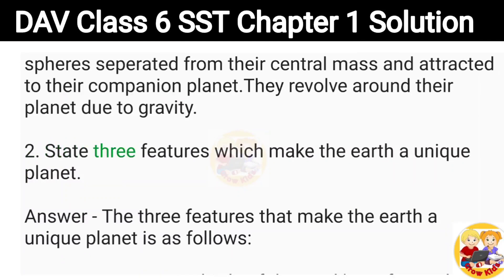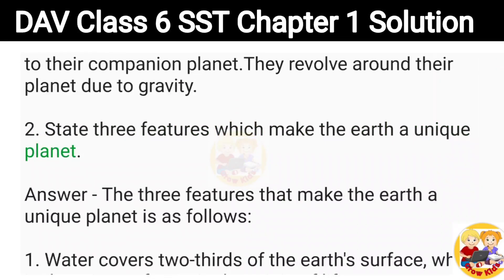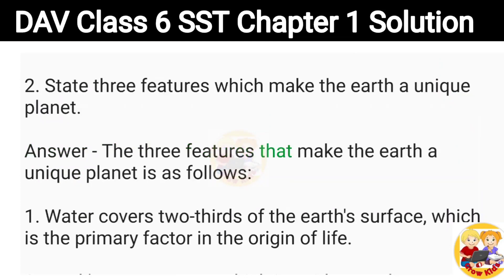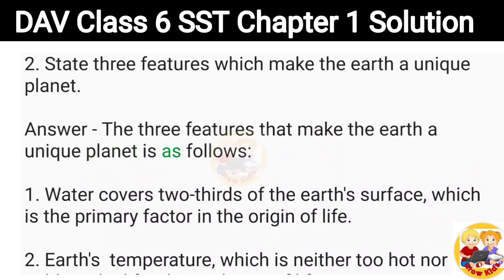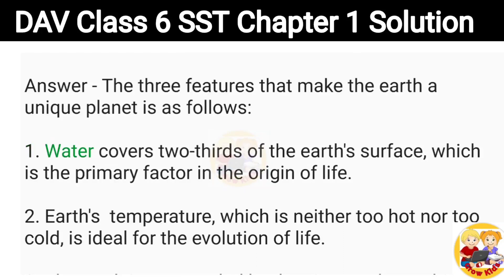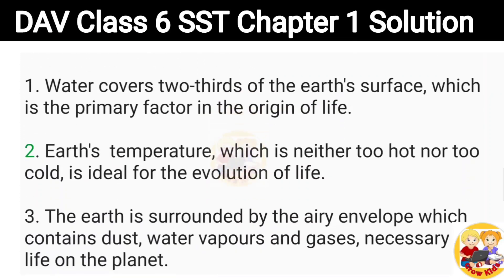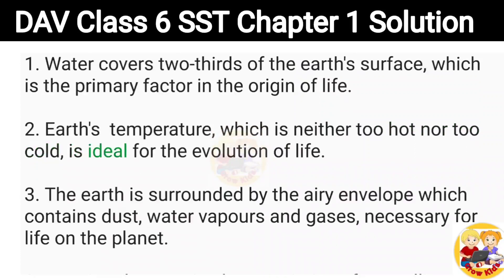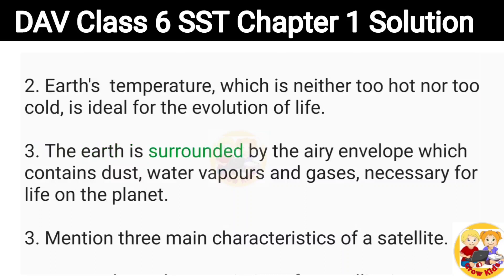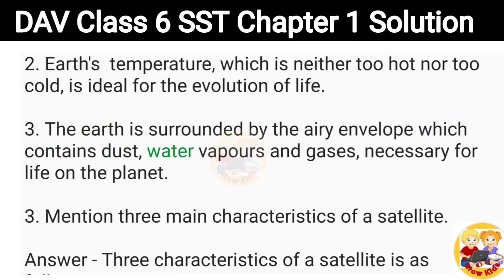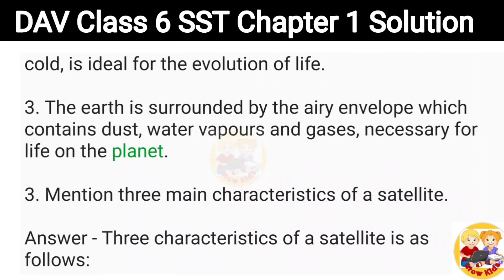2. State three features which make the Earth a unique planet. 1. Water covers two-thirds of the Earth's surface, which is the primary factor in the origin of life. 2. Earth's temperature, which is neither too hot nor too cold, is ideal for the evolution of life. 3. The Earth is surrounded by the airy envelope which contains dust, water vapors and gases necessary for life on the planet.